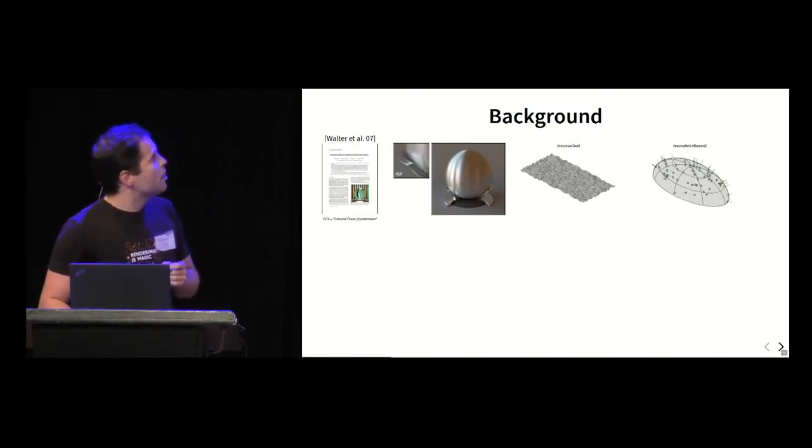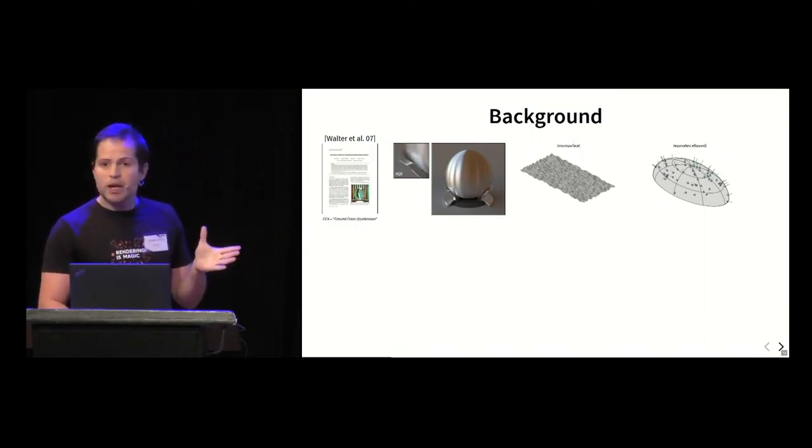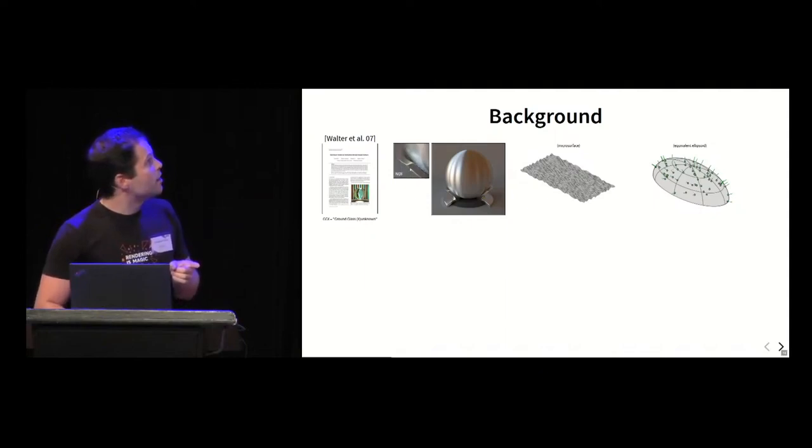In the original paper, Bruce Walter introduced an important sampling mechanism which consists of sampling a random normal, a green vector here at the surface of the ellipsoid. The problem is this importance sampling mechanism introduces some artifacts such as fireflies that you can see here.